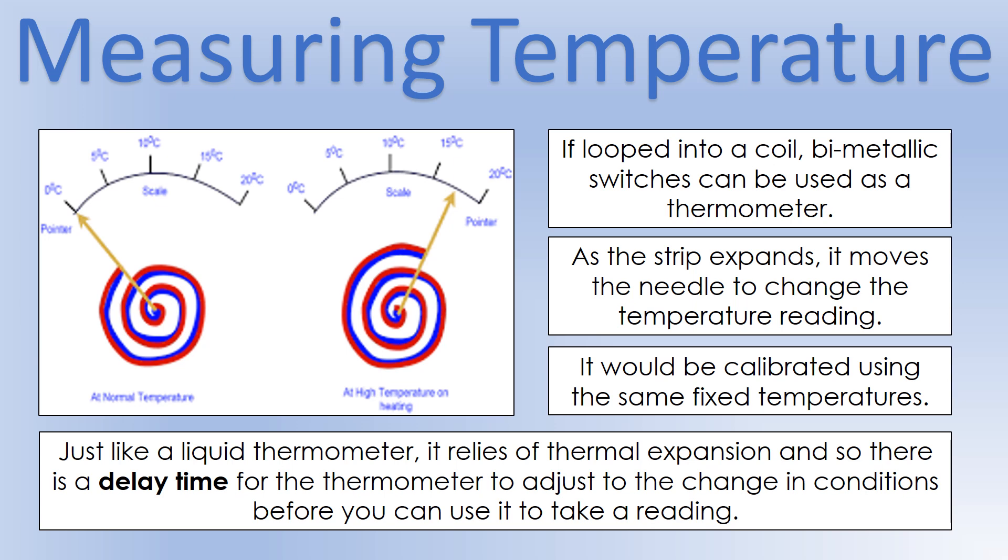But just like a liquid-based thermometer, the problem with this design is the time it takes for it to produce a reading. So you have to allow the bimetallic strip time to expand as it's heated, which takes some time. So you can't take readings very quickly with it, which is fairly problematic if you're trying to take measurements of something that's changing.